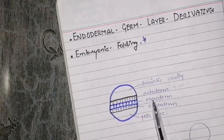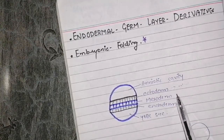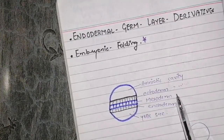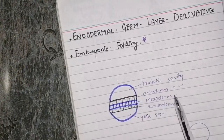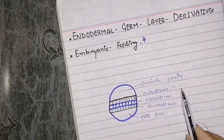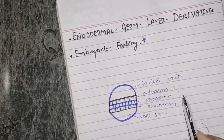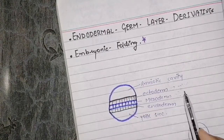After that we have the mesoderm. Mesoderm plays a very important role — it creates the axial skeleton, notochord, nucleus pulposus, ribs, and muscles. We have also seen its divisions: there were 3 divisions — paraxial mesoderm, lateral plate mesoderm, and intermediate mesoderm — and each of them had their own derivatives.